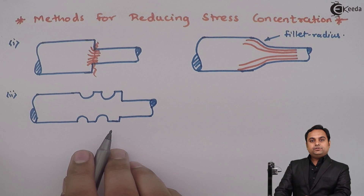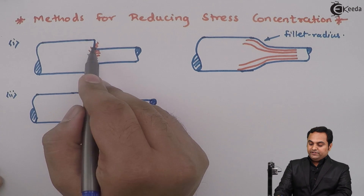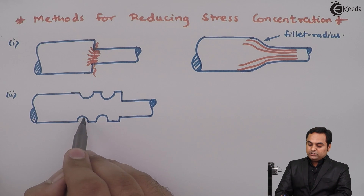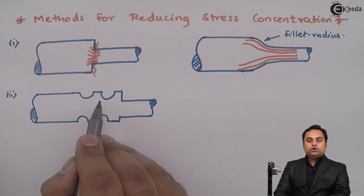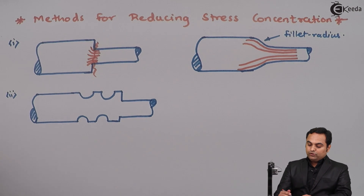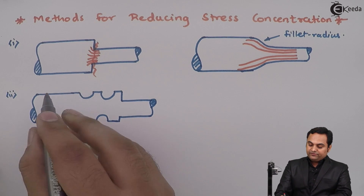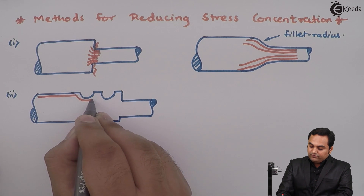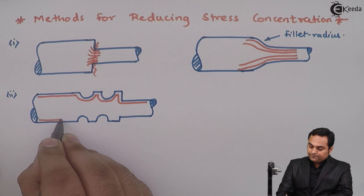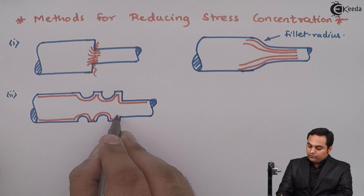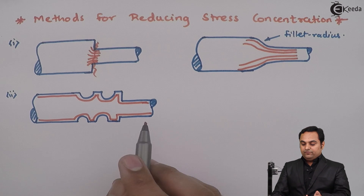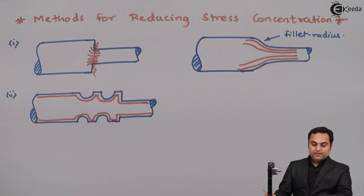Another method to reduce stress concentration is: instead of decreasing the area, we produce small holes, grooves, or notches. Because of the presence of these notches, stresses won't accumulate only at the junction but will be distributed uniformly. The stress flows along the holes and then along the junction, resulting in uniform stress distribution. This is one more method of reducing stress concentration.